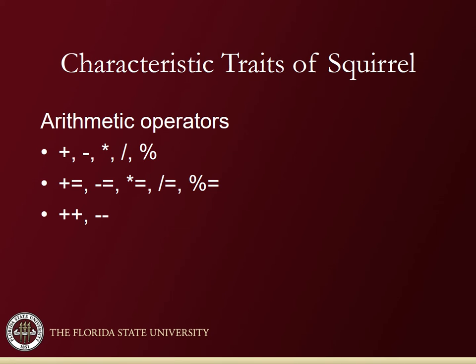Squirrel supports arithmetic operations: plus, minus, multiply, divide, and mod. You can also use the compact versions — plus equals, minus equals, multiply equals, divide equals, and mod equals. For unary operations, both increment (++) and decrement (--) are supported.